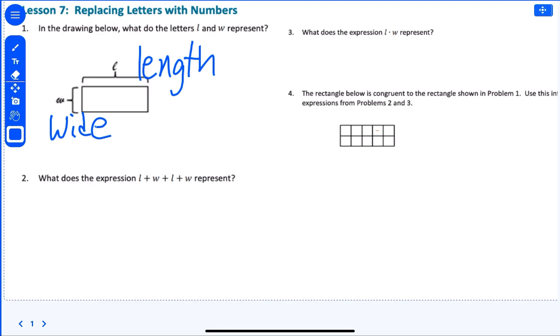So what does the expression L plus W plus L plus W represent? That would be the perimeter. That would be like saying two L's plus two W's is the perimeter, right?